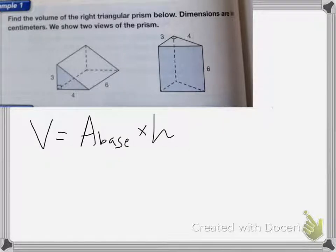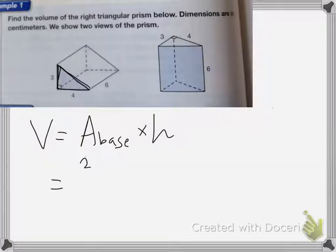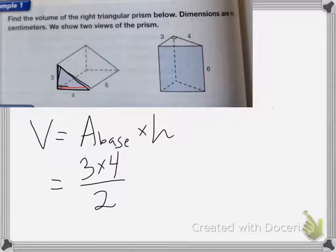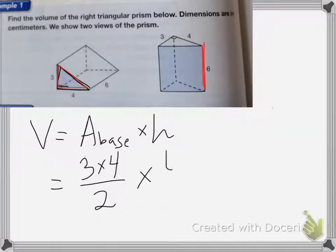The area of my base — my base is this triangle here. Since it's a triangle, the area is going to equal 3 times 4 divided by 2. Remember, the area of a triangle is base times height divided by 2. And then the height of my object, as you can see from this other view, is going to be the 6 centimeters. So we're going to be multiplying that by 6.